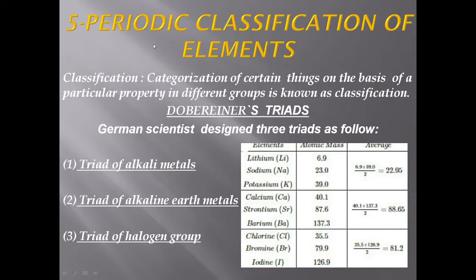First, Dobereiner tried — Dobereiner scientist gave one triad. Then second, Newland's Law of Octaves, where Newland scientist classified these elements. Then Mendeleev's periodic table, where Mendeleev classified elements based on their properties as well as atomic mass. Then we will learn the modern periodic law, modern periodic table, and the trends in it — the properties of each and every element present in the modern periodic table.